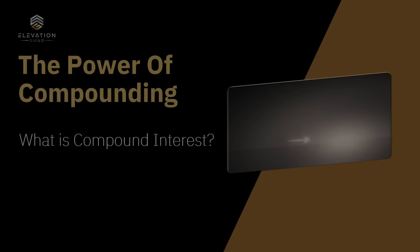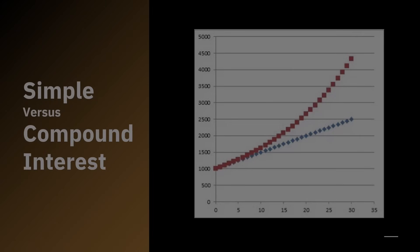Through various compound interest examples, one can see the transformative impact it has on investments, gradually turning modest amounts into significant sums. In this image, the blue dotted line represents simple interest and the red dotted line represents compound interest. Simple interest is calculated on the initial principal amount, while compound interest is calculated on the initial principal and the accumulated growth or interest of previous periods. Simple interest growth is linear; compound interest is exponential.